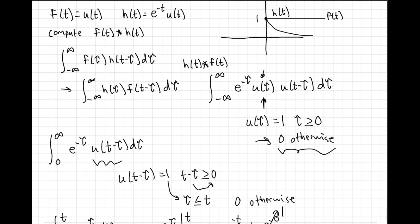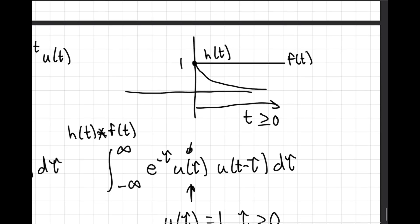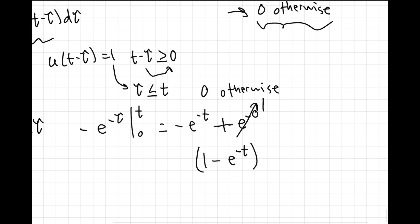But we're not quite done yet because we have to acknowledge the fact that our two inputs were given for t greater than or equal to 0. So our output should also only be valid for that range. And to say that fancily, we use the unit step function. Here we get 1 minus e to the negative t multiplied by the unit step function as the answer to the convolution of f and h.